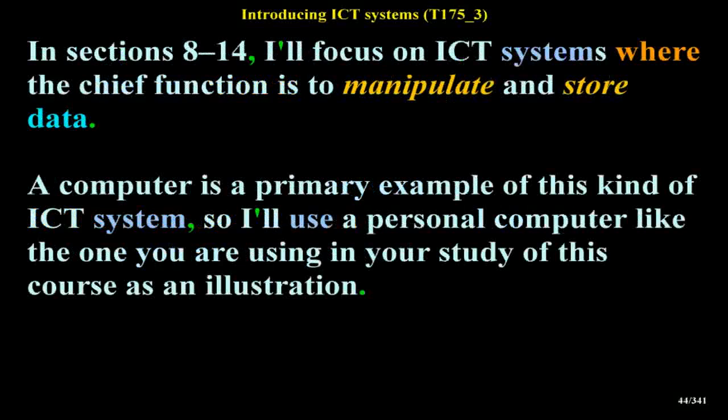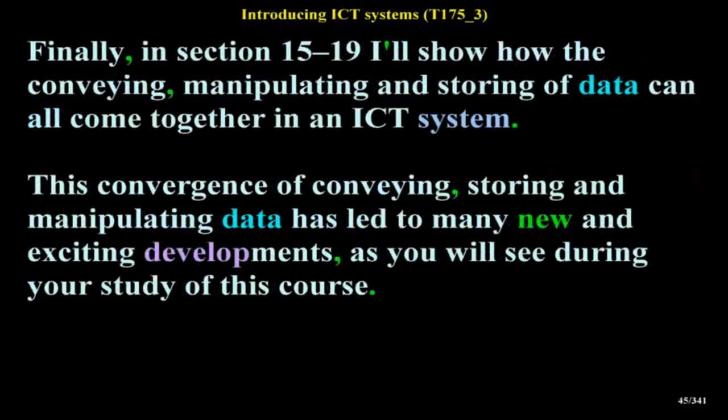In sections 8–14, I will focus on ICT systems where the chief function is to manipulate and store data. A computer is a primary example, so I'll use a personal computer as an illustration. Finally, in sections 15–19, I'll show how the conveying, manipulating and storing of data can all come together in an ICT system. This convergence of conveying, storing and manipulating data has led to many new and exciting developments.